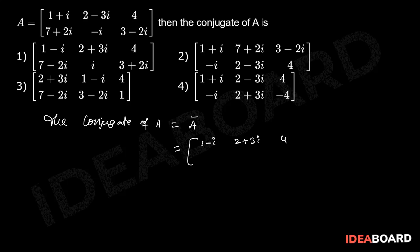7 plus 2i conjugate is 7 minus 2i, minus i conjugate is plus i, and 3 minus 2i conjugate is 3 plus 2i. This is the conjugate matrix of A. So the correct answer is the first option.